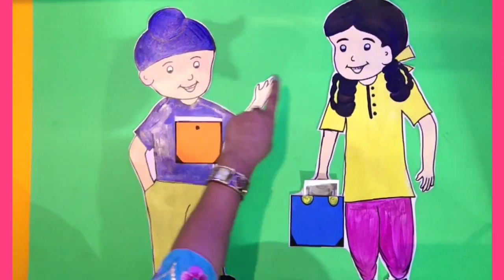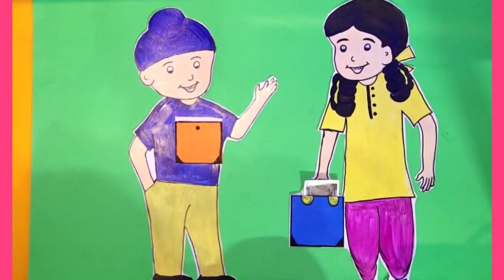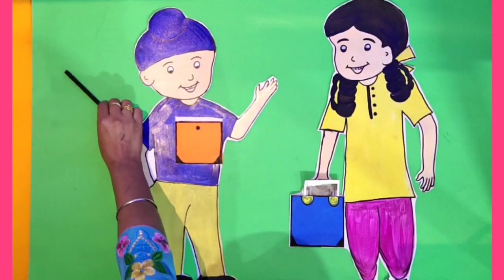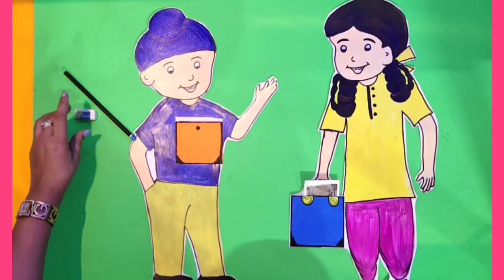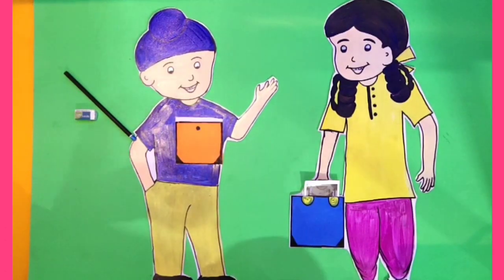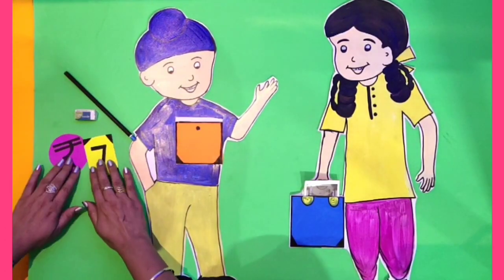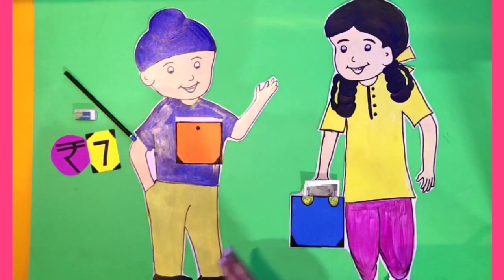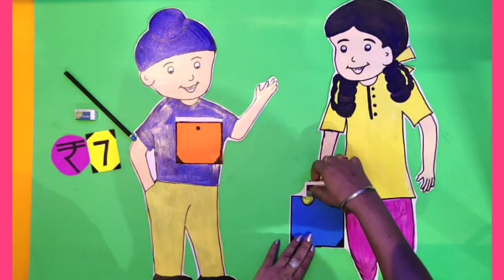Dear students, Sukman and Arpan are brother and sister. Sukman wants to buy a pencil and an eraser worth rupees 7. He asks Arpan for rupees 7. Now let's see how many rupees are there in Arpan's purse.